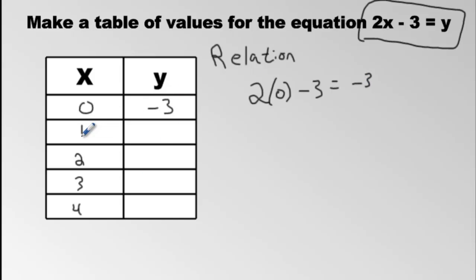Now we're going to put 1, x is 1. So instead of 2 times 0, I'm going to put 2 times 1, minus 3, equals, and what's 2 times 1? 2. Minus 3, negative 1. So we'll put negative 1 here.